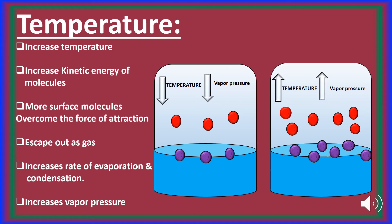The second factor affecting vapor pressure is temperature. Temperature is directly proportional to vapor pressure — with an increase in temperature, vapor pressure increases, and with a decrease in temperature, vapor pressure decreases. This happens because with increasing temperature, the kinetic energy of the molecules increases and more molecules overcome the force of attraction, changing from liquid to gaseous state, increasing the rate of evaporation and condensation. As a result, vapor pressure increases with increasing temperature.